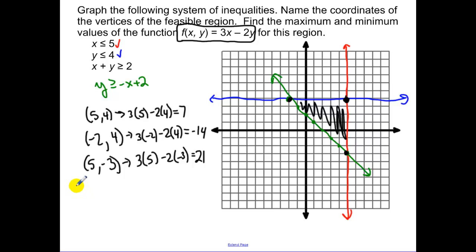So we have to think about this. What's our minimum? The minimum is the smallest value. The minimum of those four values is negative 14 at the point negative 2, 4. Our max, what's the largest of the numbers, 21, at the point 5, negative 3.